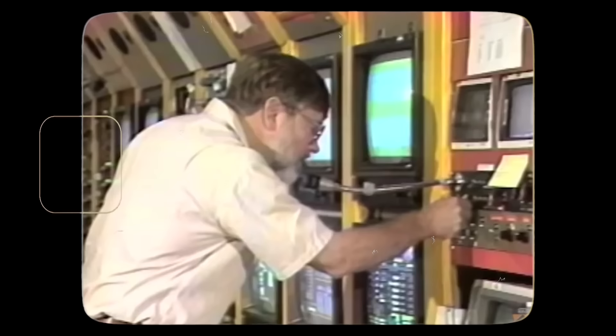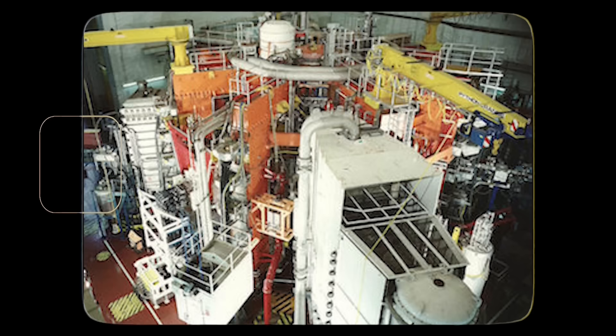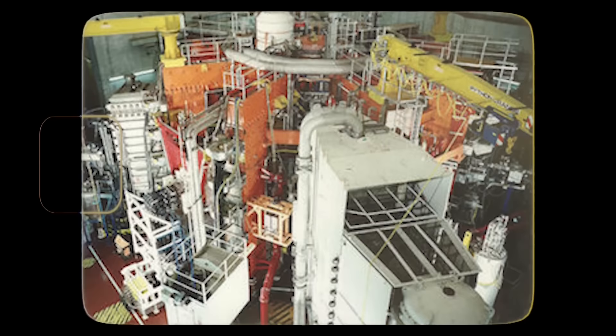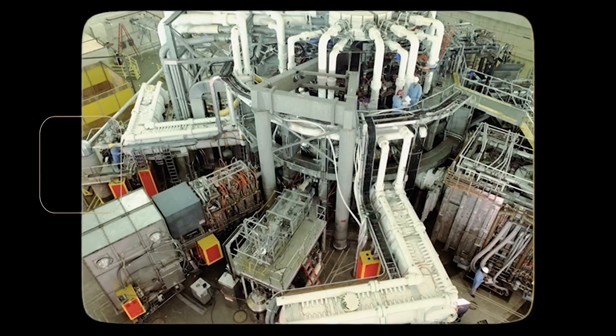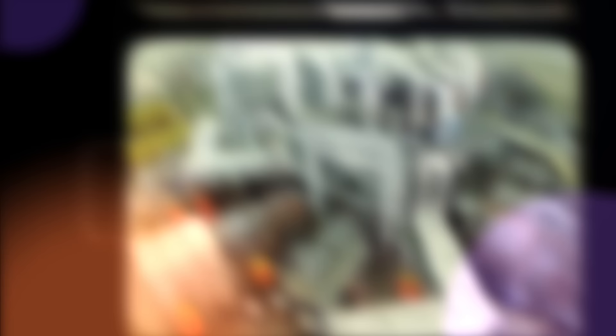The 1980s saw the construction of larger and more powerful tokamaks, such as the Joint European Torus, or JET, in the UK, and the Tokamak Fusion Test Reactor, or TFTR, in the U.S., which reached record levels of fusion power and plasma performance.